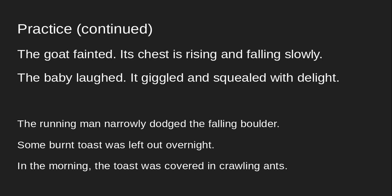Number one — instead of having two sentences, we could say 'The fainted goat's chest is rising and falling slowly.' That makes it a bit complex, but we still have the past participle 'fainted' telling us about the goat. Number two: 'The laughing baby giggled and squealed with delight' — that's using a present participle. Then we have 'The running man narrowly dodged the falling boulder' — 'running' is a present participle modifying 'man,' and 'falling' is a present participle modifying 'boulder.'